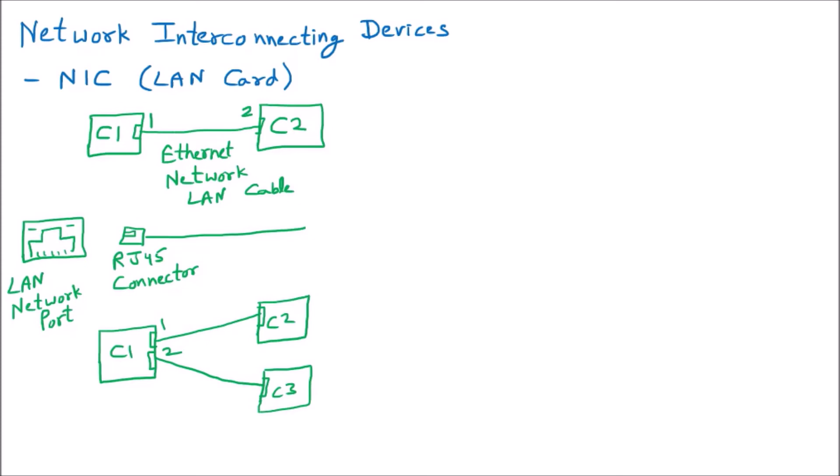For example, suppose you have taken broadband from two companies — say Uninet and Cifi Net. These two connections come into your computer. If you select one for the network it gives you one IP, and if you switch to the other it gives you a different IP. So your system can have multiple IPs.